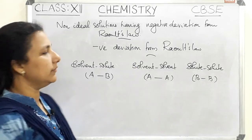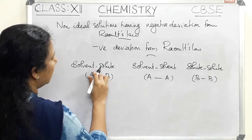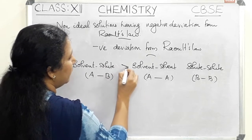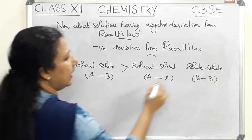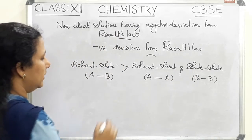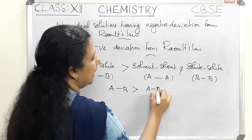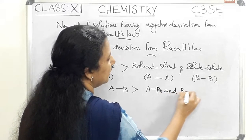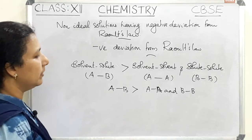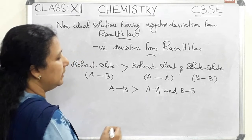If this solution is having a negative deviation from Raoult's law, the reason is that the solvent-solute interaction is greater than solvent-solvent interaction and solute-solute interaction. That means A-B interaction is greater than A-A interaction and B-B interaction. So that is the reason why this solution is having negative deviation from Raoult's law.